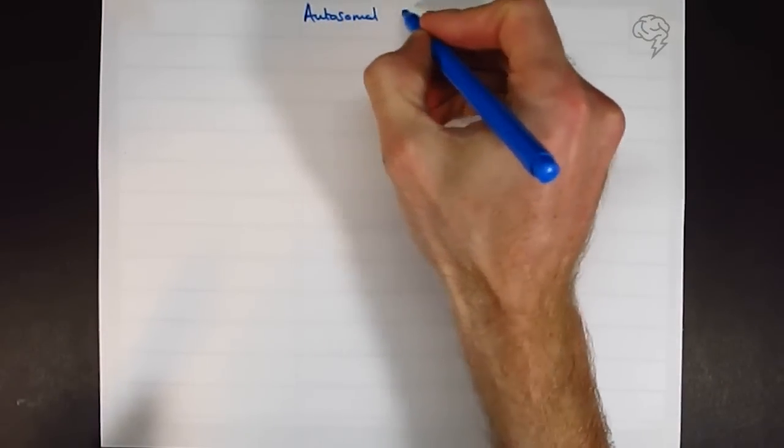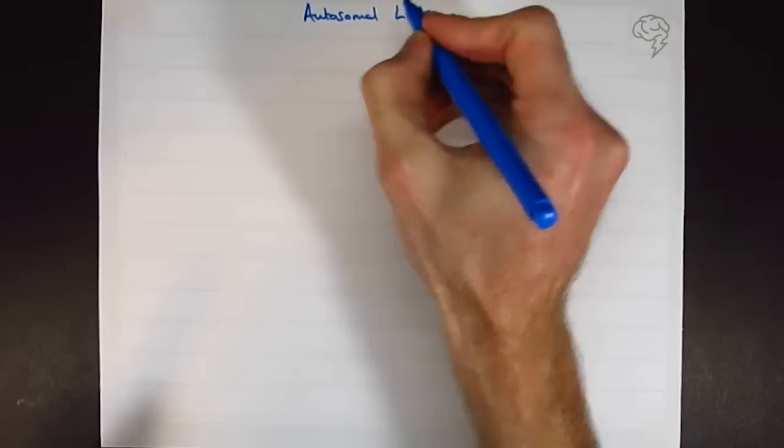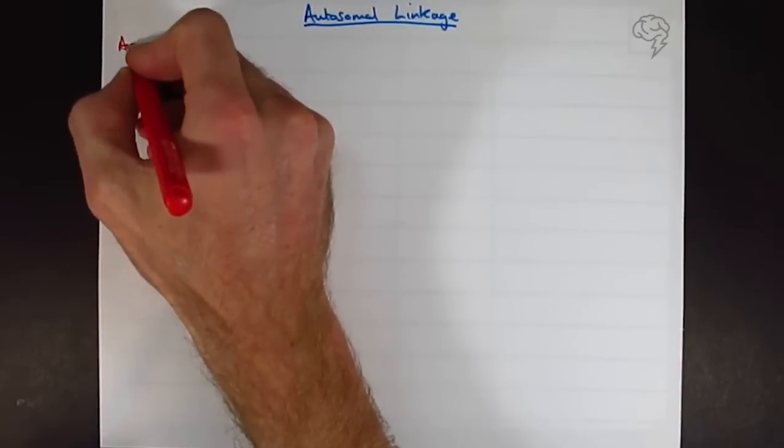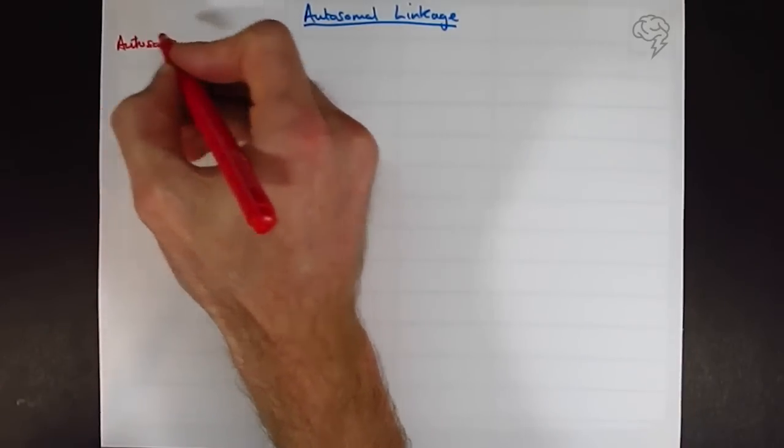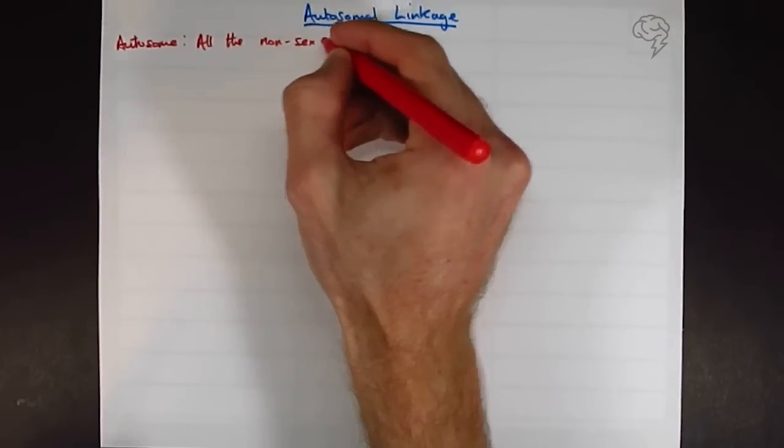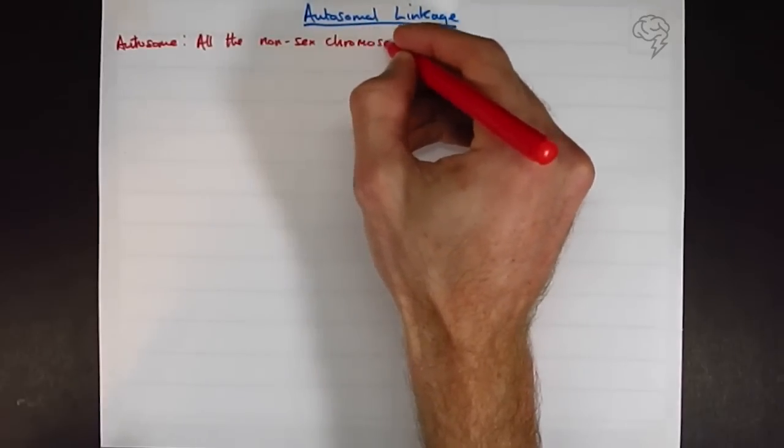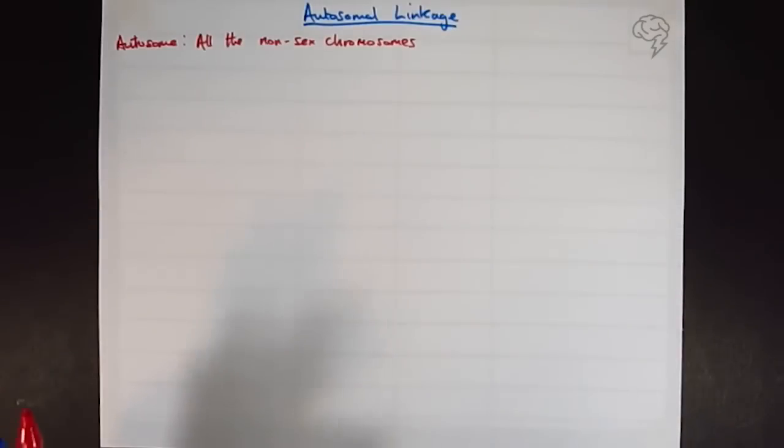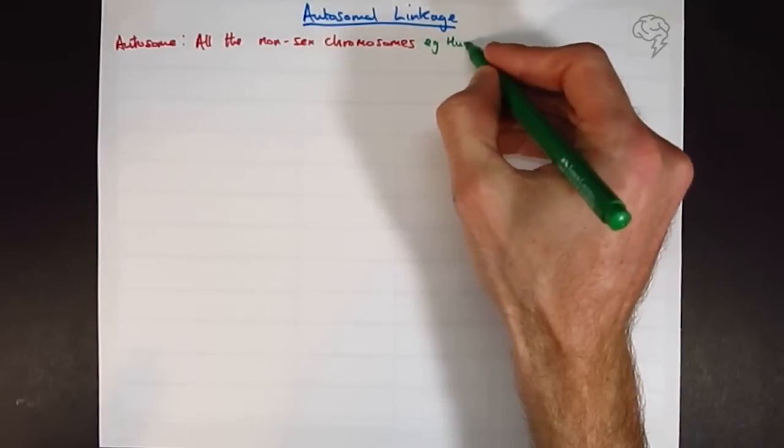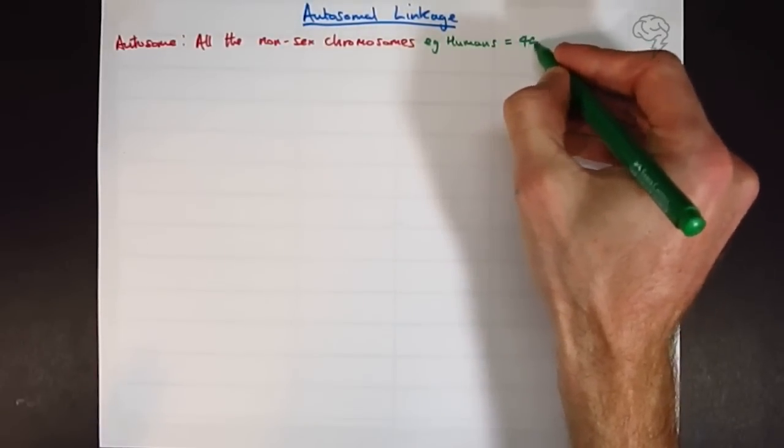Autosomal Linkage. So what is an autosome to begin with? An autosome is any chromosome that is not a sex chromosome. In humans, we've got 46 chromosomes, or 23 pairs of chromosomes, and two of them are sex chromosomes, so that leaves us with 44 regular chromosomes or autosomes.